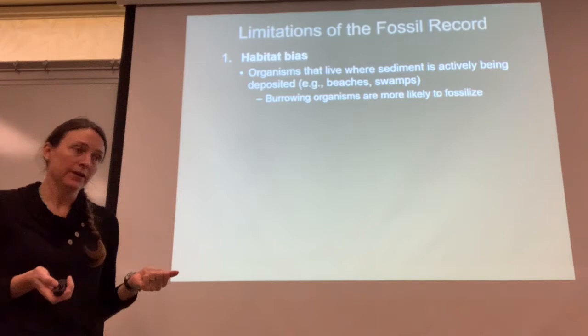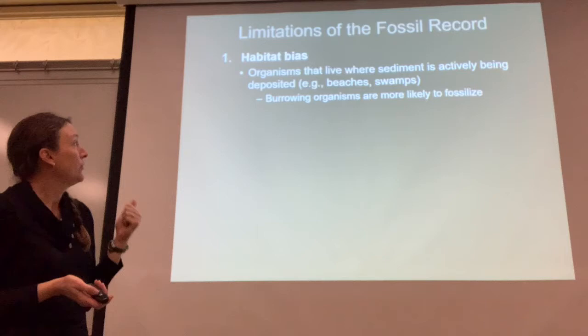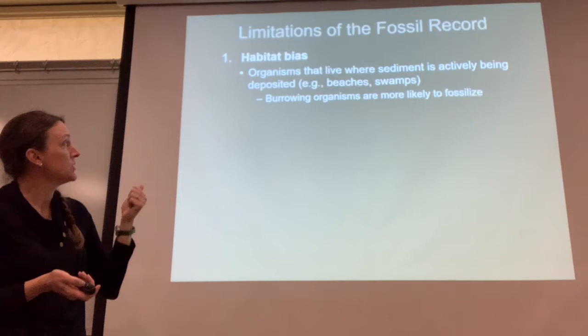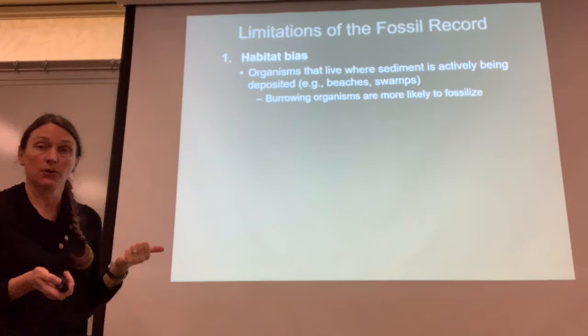But there are limitations to the fossil record, and we'll see why we don't have fossils of everything. There's habitat bias — things that live in particular habitats are more commonly fossilized. Beaches, swamps, and burrowing organisms have a better chance of being fossilized than other organisms.